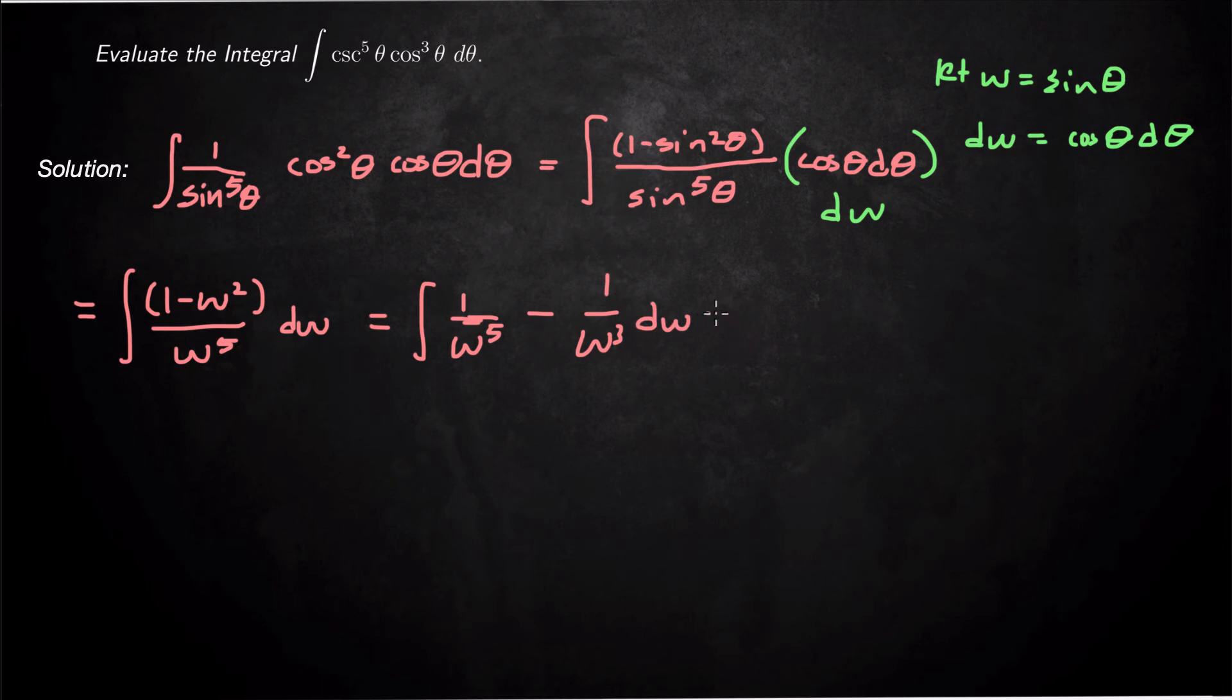Integrate both of those with the power law. That's going to be negative 1 over 4, 1 over w to the fourth power minus negative 1 over 2 w or 1 over w squared plus c.